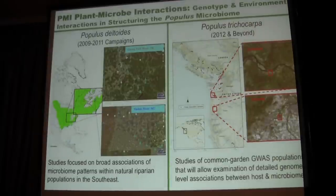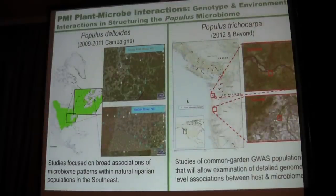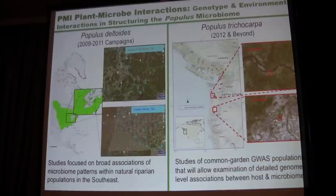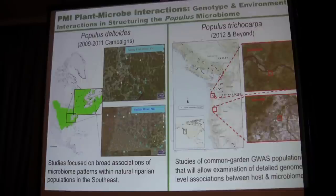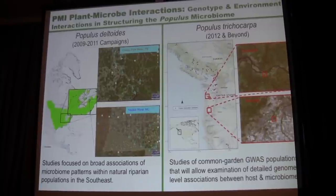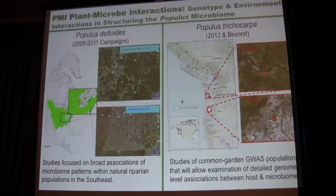For about three years now, we've been looking at Populus deltoides populations in the eastern U.S., looking at natural riparian systems and broad-scale associations and microbiome patterns within these environments. Even though this is a metagenomics session, there's no shotgun metagenomics in this talk — it's all going to be about ribosomal RNA community patterns. We've been working on that for about three years. I'll tell you a couple of stories about that, and then I'll give a few slides at the end about our new projects with JGI associated with Populus trichocarpa common gardens in the Pacific Northwest — the sequences are just now coming back, so I won't show data from that.